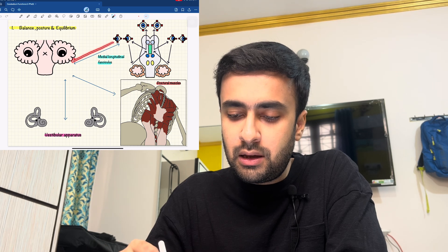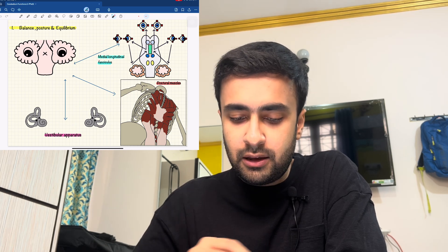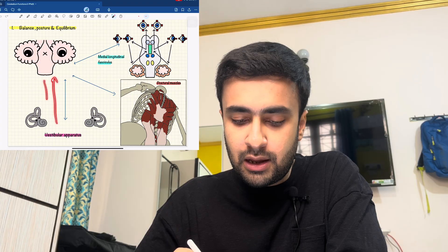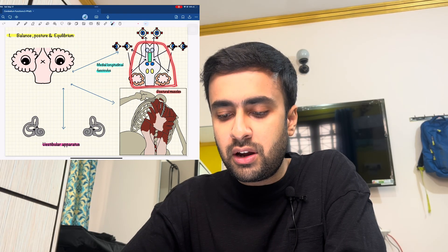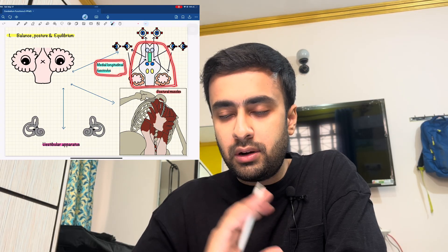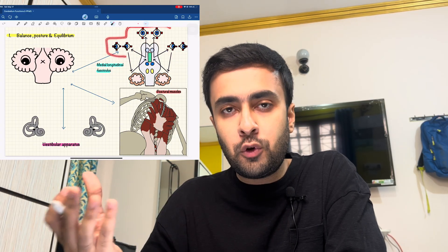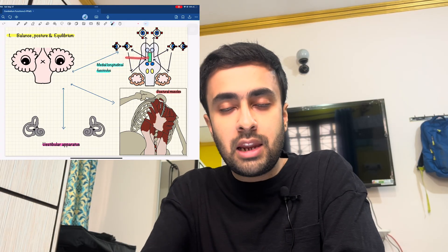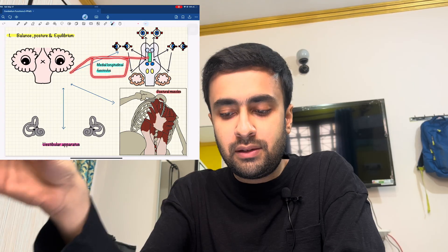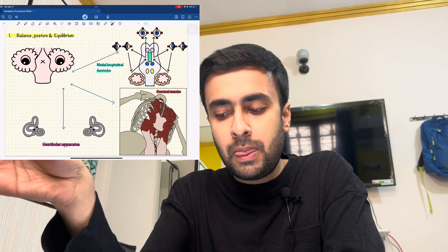As you can see, there is bidirectional communication of the cerebellum with the eyes and the vestibular apparatus. There is a structure in the midbrain called the medial longitudinal fasciculus that coordinates all movements of the eyes and relays the information to the cerebellum.